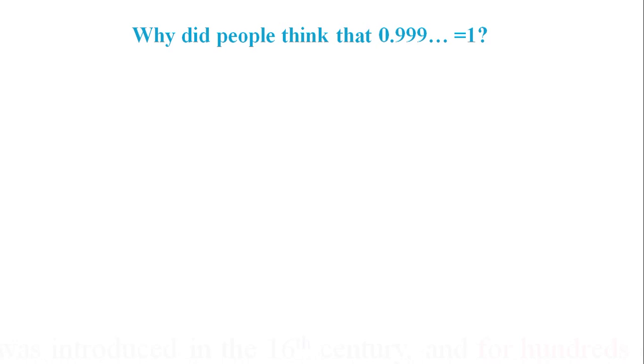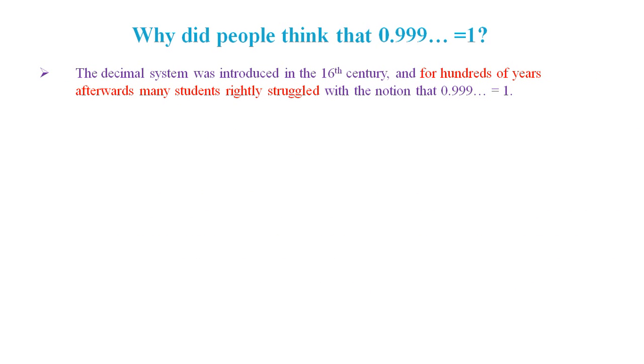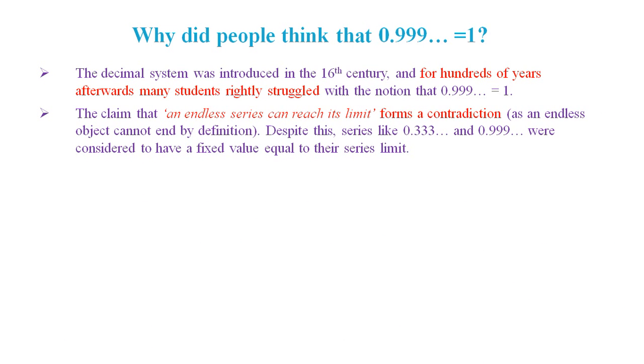So why did people think that 0.9 recurring equals 1? Well, the decimal system was introduced in the 16th century, and for hundreds of years afterwards, many students rightly struggled with the notion that 0.9 recurring equals 1. The claim that an endless series can reach its limit forms a contradiction, as an endless object cannot end by definition. Otherwise it wouldn't be endless. Despite this, series like 0.3 recurring and 0.9 recurring were considered to have fixed values equal to their series limit.